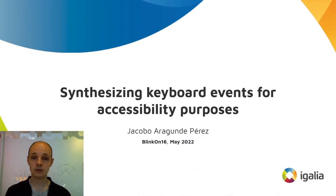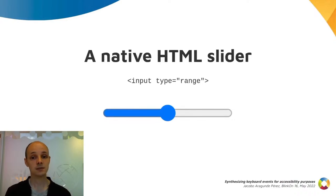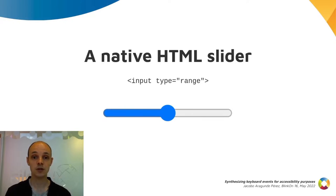A lot of our work to make the browser accessible is to make sure that everything can be used with only a keyboard. For example, for a native HTML slider to be accessible, we need it to accept key presses to modify its value.